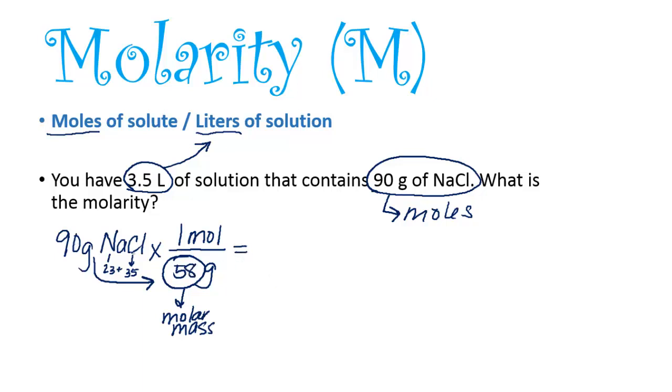So 90 divided by 58 is 1.55 moles. So there's our moles. Now we just need to divide this by our liters of solution, which is 3.5 liters.